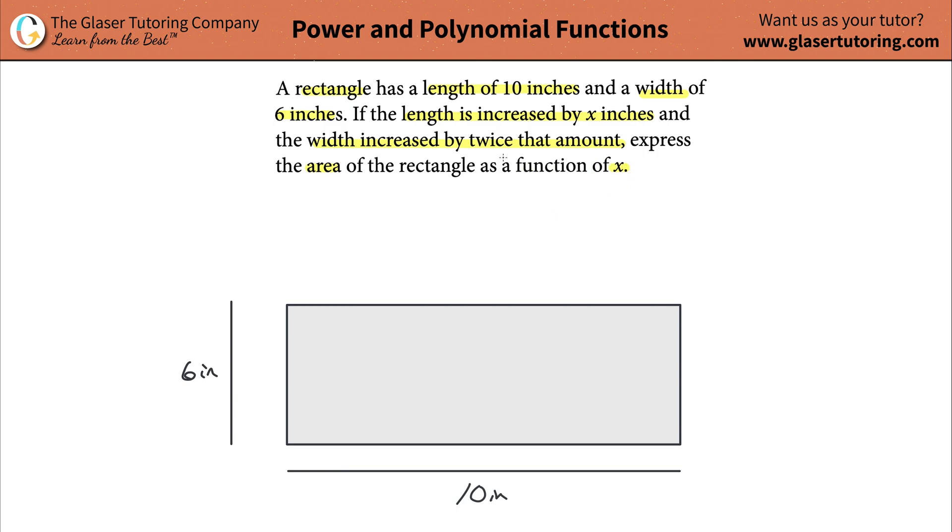All right, so before we get into what's changing, let's take a look at our picture. We've got a rectangle, the length is 10, the width is 6 inches. If I asked you how to calculate the area of this rectangle, how would you do it? Length times width. The length is 10 inches, the width is 6 inches, so it's going to be 60 inches squared. Fantastic job, you are absolutely correct.